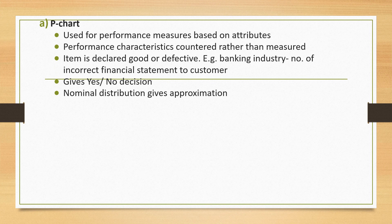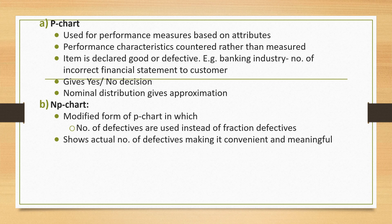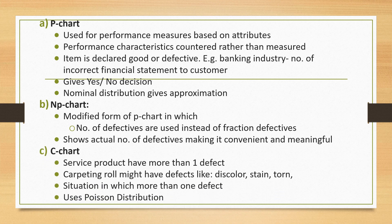The P chart is used for performance measures based on attributes — the performance characteristic is counted rather than measured, and the item is declared good or defective. For example, in banking, it counts the number of incorrect financial statements given to customers; it gives a yes/no decision using a binomial distribution approximation. The NP chart is a modified form of the P chart in which the number of defects is used instead of the fraction defective, showing the actual number of defects. The C chart is used when a product or service may have more than one defect — for example, carpeting may have defects like discoloration, staining, and tearing. It uses the Poisson distribution method.